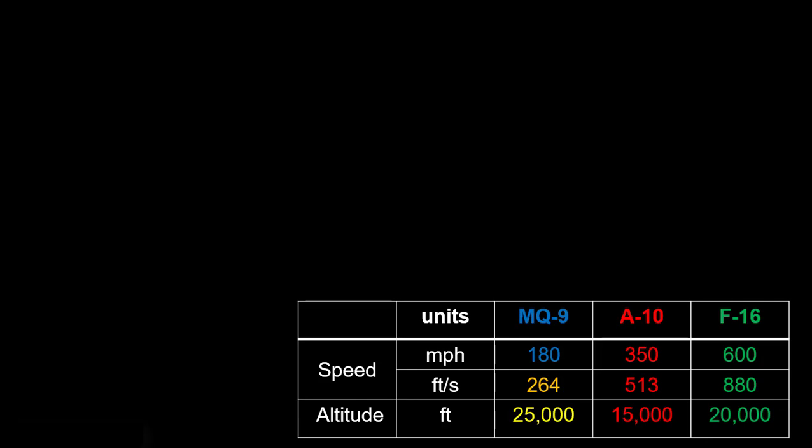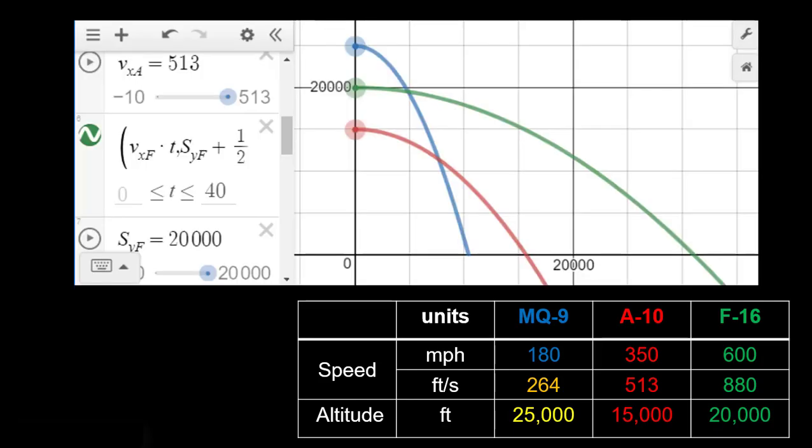So if a bomb was dropped from each of these aircraft at the same time, which of them is going to go the furthest, which of them will land first. Well, if we plot it out, it looks like this. So we've got our MQ-9 on top here in the blue, and then we've got our A-10 here on the bottom, and our F-16 here in the middle in the green. And you can see that our F-16 clearly is dropping the bomb the farthest, because that speed is the greatest, at 600 miles per hour.